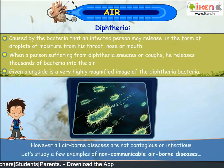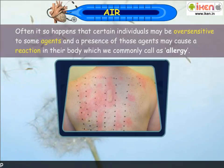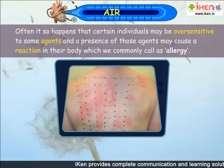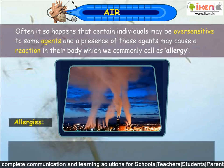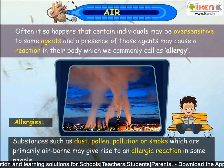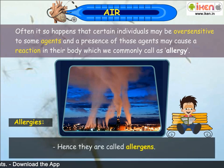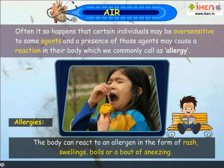Let us study a few examples of non-communicable airborne diseases. Often, it so happens that certain individuals may be oversensitive to some agents, and the presence of those agents may cause a reaction in their body which we commonly call an allergy. Substances such as dust, pollen, pollution or smoke, which are primarily airborne, may give rise to an allergic reaction in some people; hence they are called allergens. The body can react to an allergic reaction in the form of a rash, swelling, boil or a bout of sneezing.